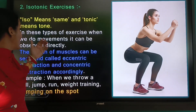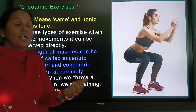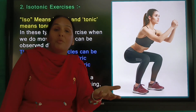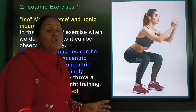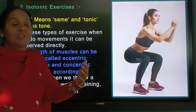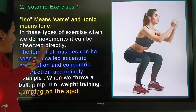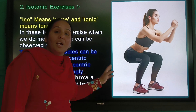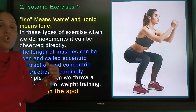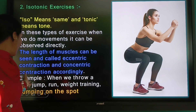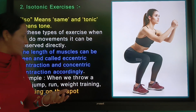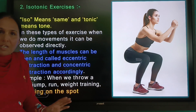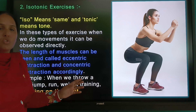Isotonic strength: iso means same and tonic means tension. The muscles can be seen working through concentric and eccentric contractions — two types. The length of the muscles changes in isotonic exercises. Examples include throws, jumping in sport, and weight training — isotonic exercises can be done with or without equipment.